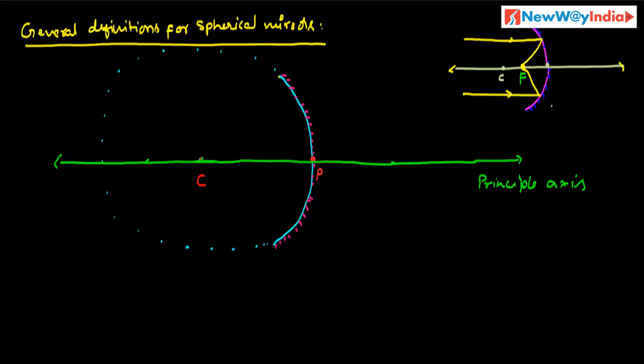The principal focus is a point on the principal axis where a beam of light parallel to the principal axis, after reflection, either actually meets at that point or appears to come from that point. It is denoted by F. In the case of a concave mirror, the principal focus is in front of the reflecting surface.